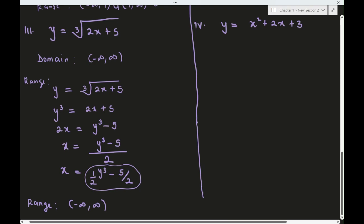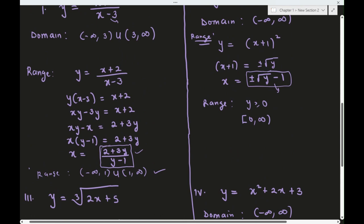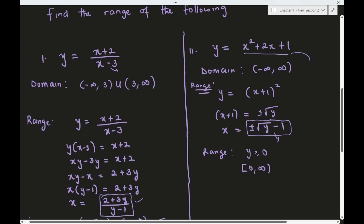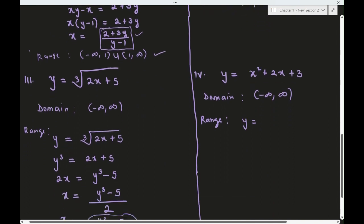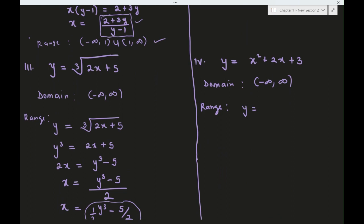For number four, this is also a polynomial so the domain is all of ℝ. To find the range we solve for x in terms of y. Unlike the previous case which was a perfect square, we have x² + 2x + 3, so we need to complete the square.